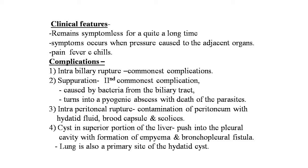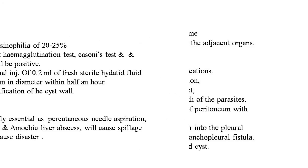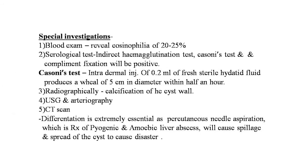Intraperitoneal rupture contaminates the peritoneum with hydatid fluid, brood capsules, and daughter cysts. Cysts in the superior portion of the liver may push into the pleural cavity, causing empyema and bronchopleural fistula. The lung is also a primary site of hydatid cysts.